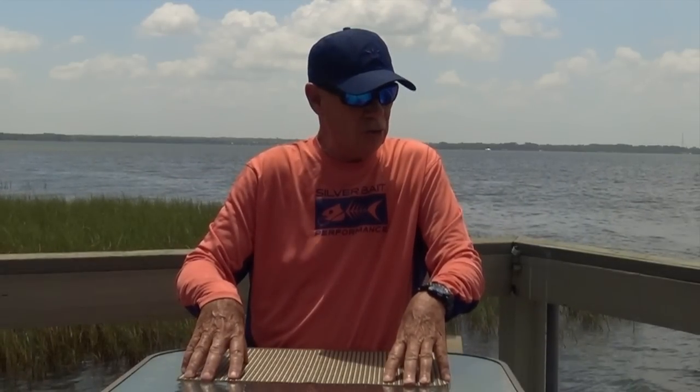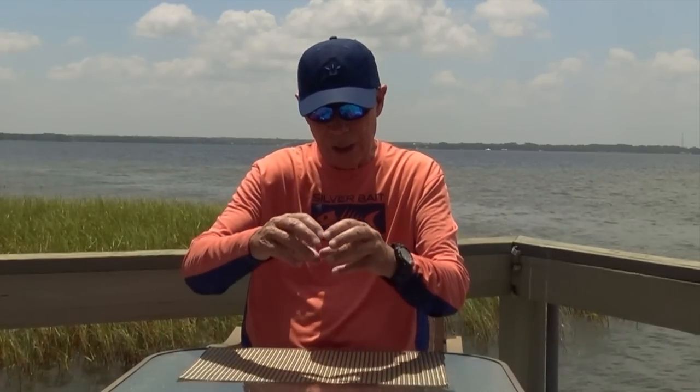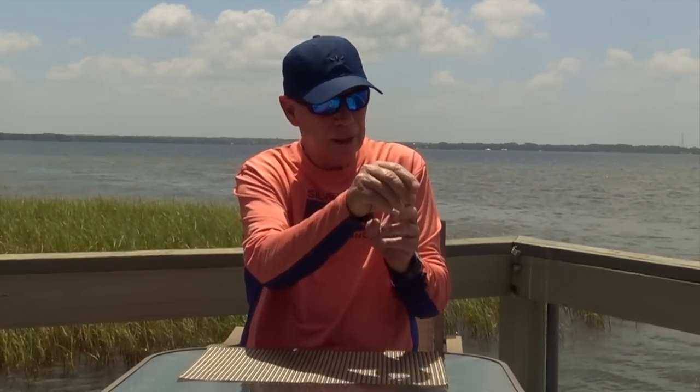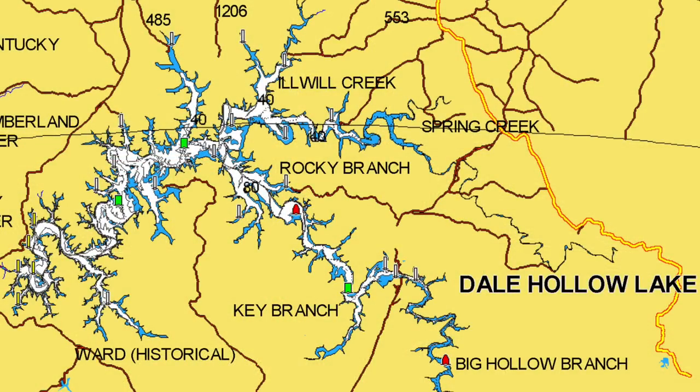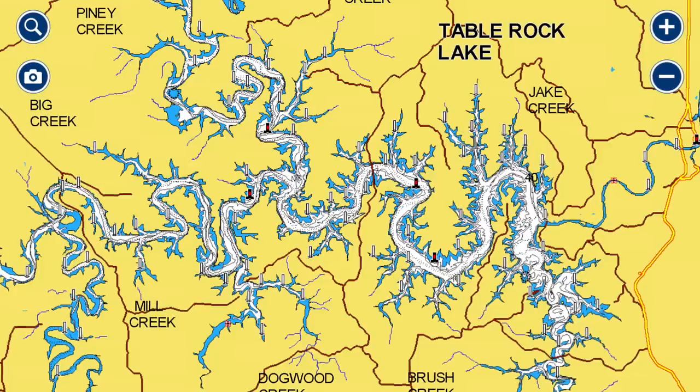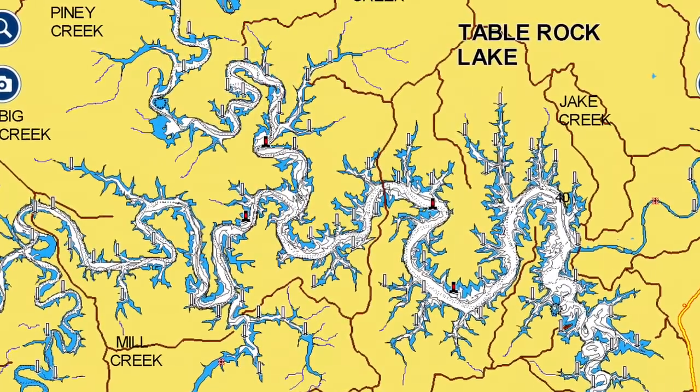A highland number one reservoir is just what it says — it's built in high, mountainous, rocky terrain. If you look at a road map, you don't even need a fishing map. When you see a lake that's relatively skinny and has hundreds and hundreds of little sharp coves going off of it all up and down — like Dale Hollow, Tennessee — that's a highland reservoir built in mountainous terrain. It's a dead giveaway; you can tell a highland number one every time.